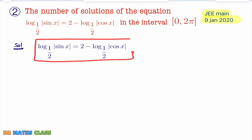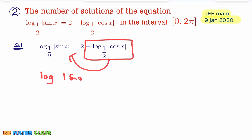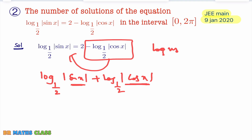First I will simplify this equation. There is a minus of log|cos x| base 1/2. Now take it to the left-hand side — this will become log|sin x| plus log|cos x| base 1/2. This looks like log m + log n, and the formula for log m base a + log n base a is log(mn) base a.